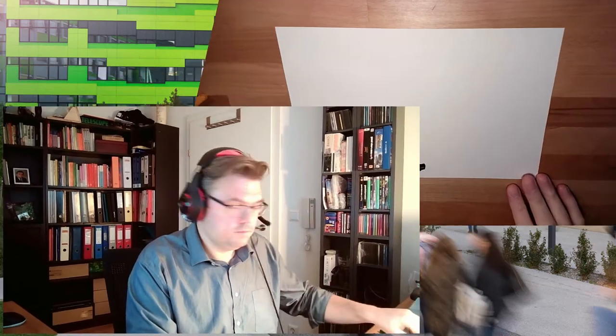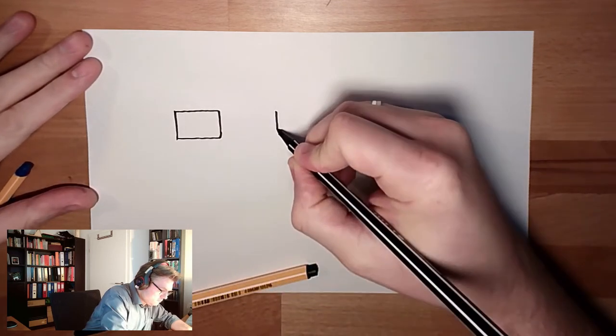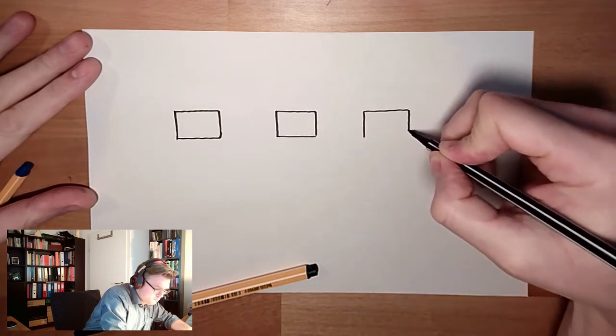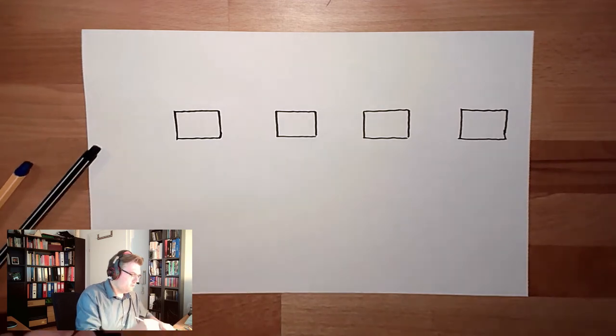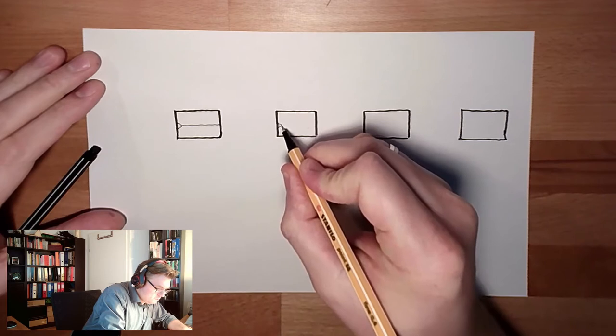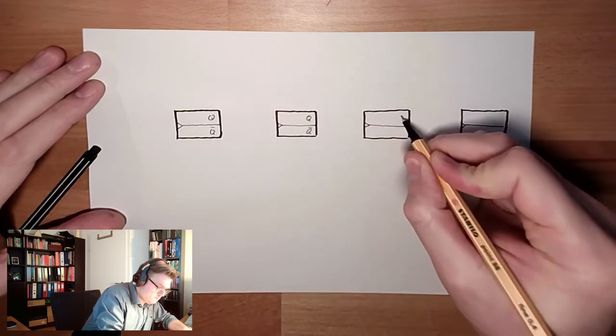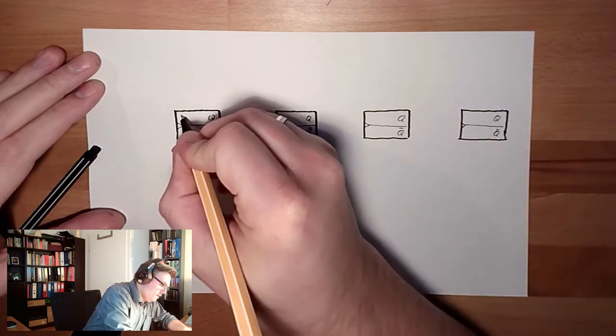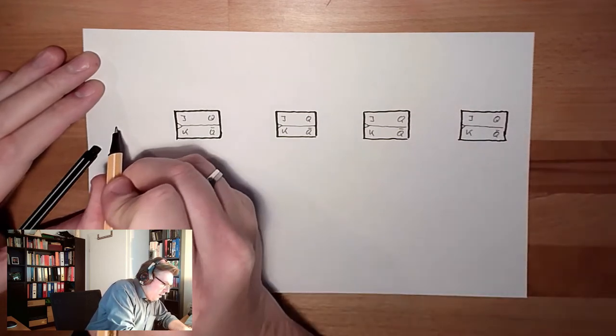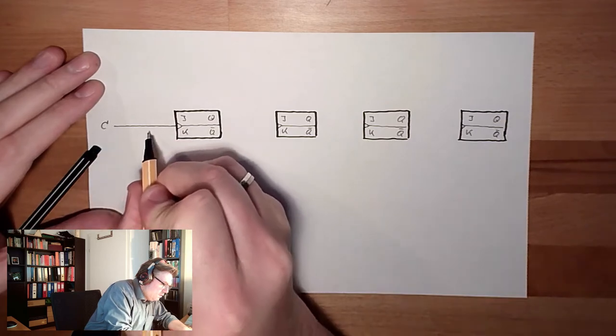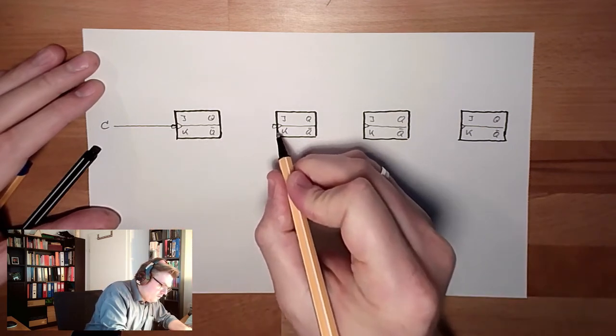I'll show you how synchronous counters are built. Again we have four flip-flops. And again we are reacting on the edge. This is JK flip-flops. And now we have a clock input, and this clock input is going directly to the flip-flops. Here's an inverted falling edge.